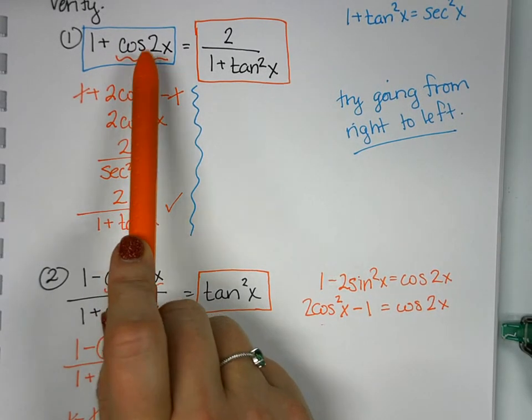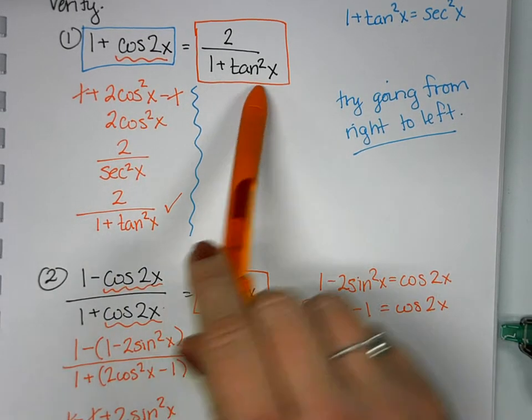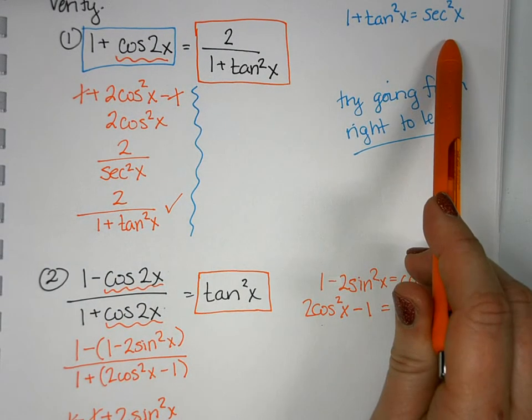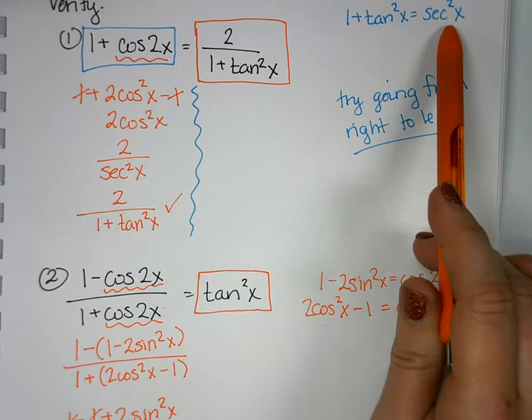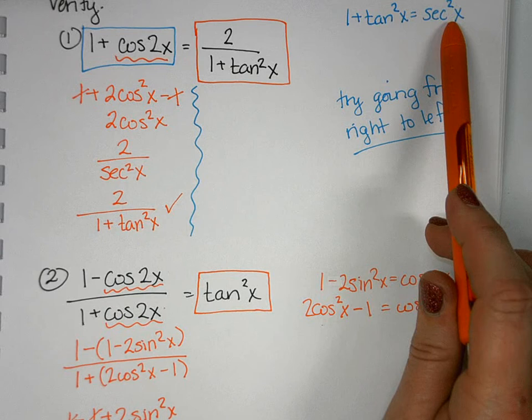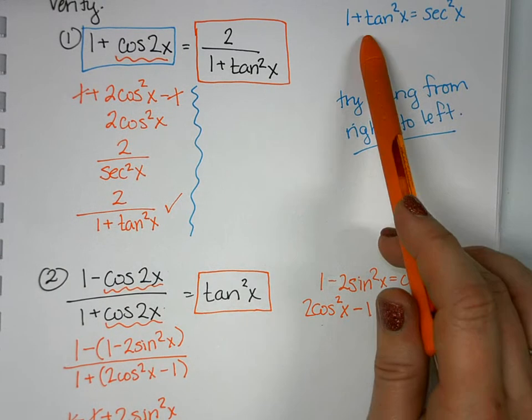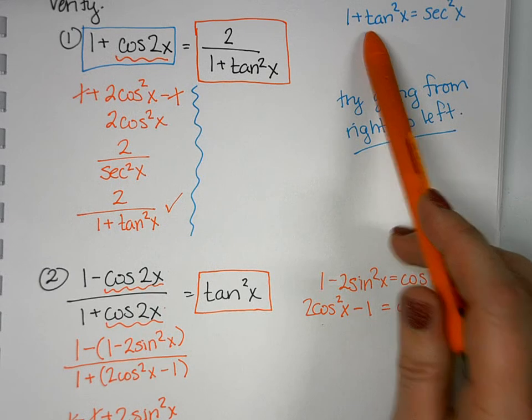I needed to somehow turn it into a tangent, and that's where my trig identity, my Pythagorean identity, came into play. Because I knew that if I could turn a cosine into a secant—in other words its reciprocal—I can get it to turn into a tangent using an identity, the Pythagorean identity.